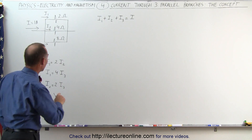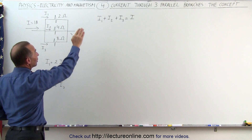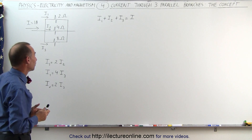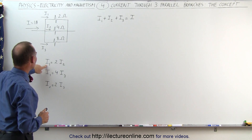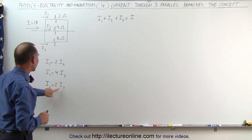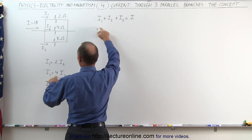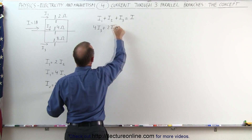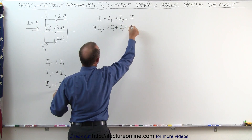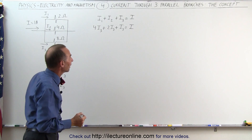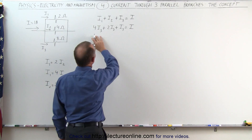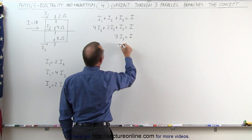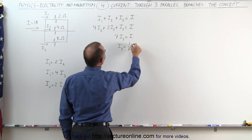Now I'm ready to plug these relationships into our original equation, calculating everything in terms of I3. I replace I1 with four times I3, and I2 with twice I3. So the equation becomes: four I3 plus two I3 plus I3 equals the total current I. Adding those together — four plus two plus one — gives seven I3 equals I, or I3 equals one-seventh I.